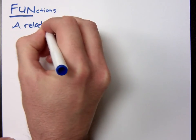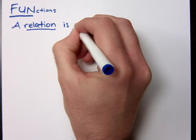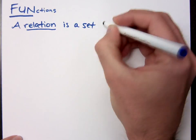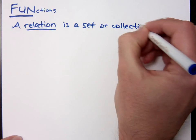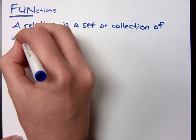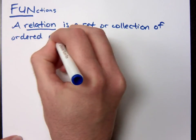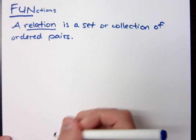You mean like a brother or a sister? No, a relation is a set or a collection of ordered pairs.